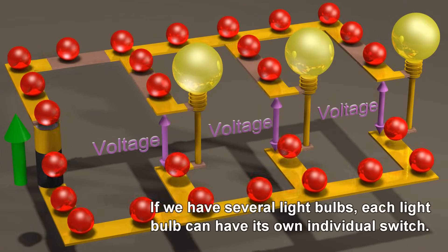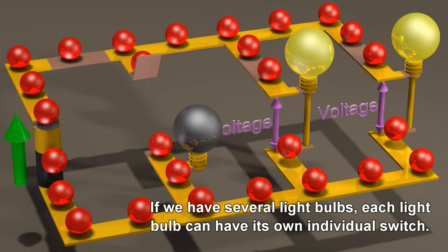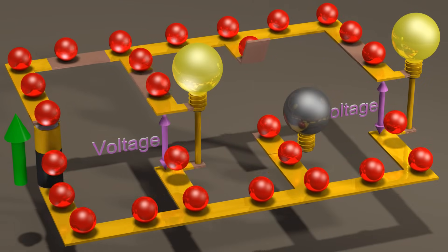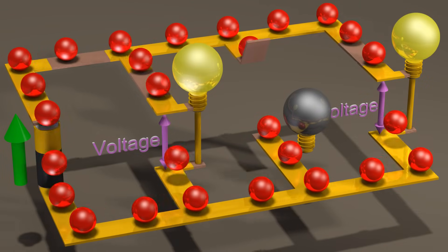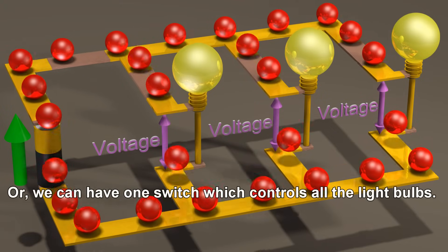If we have several light bulbs, each light bulb can have its own individual switch. Or, we can have one switch which controls all the light bulbs.